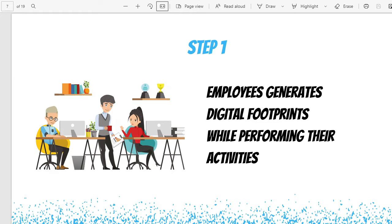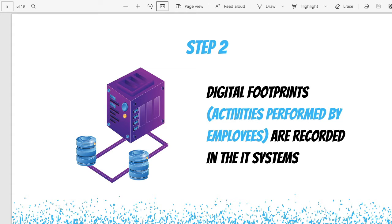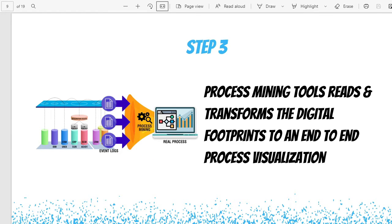In a few steps, how it works: step one, employees generate digital footprints while performing their activities. Any activity they perform, a log is created in the IT system — recording what time an activity was performed and what the activity was. That log sits in an IT system log table. Step two, the digital footprints are recorded in the IT system. Step three, the process mining tool reads these digital footprints, cleanses them, and transforms them into a data model. That data model is loaded into the process mining tool and an end-to-end process visualization is automatically created.